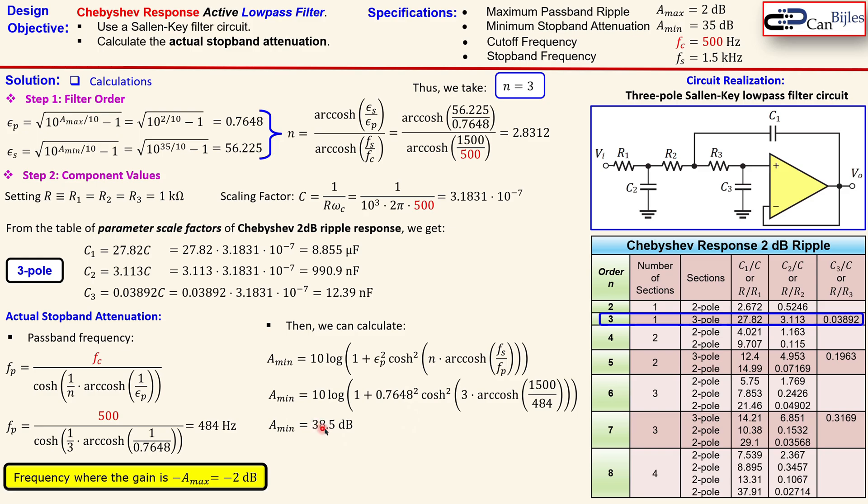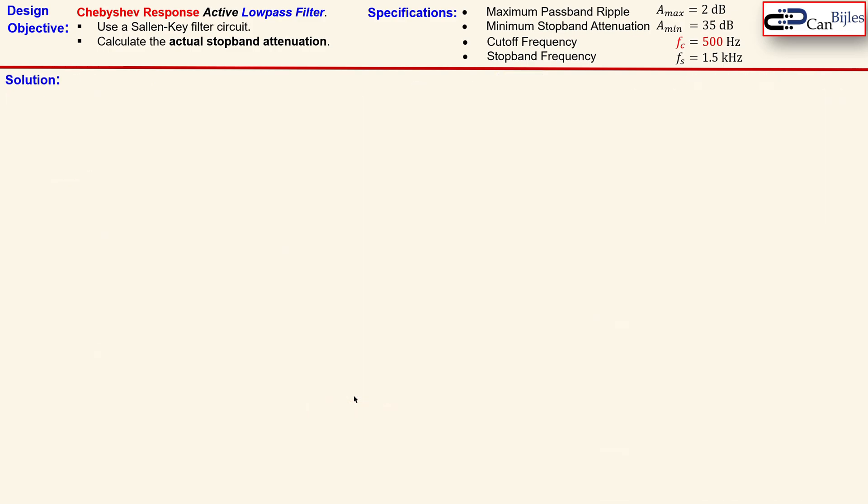This will result in 38.5 dB. Now we required from our design 35 dB, so we have achieved our goal because this is larger than the 35 dB.